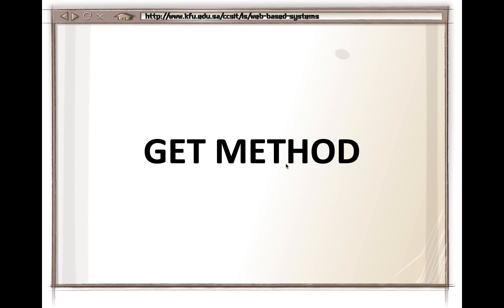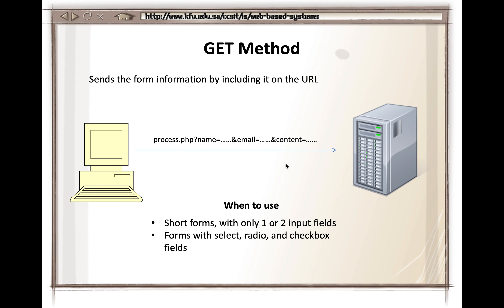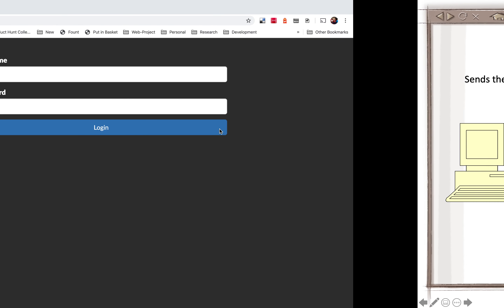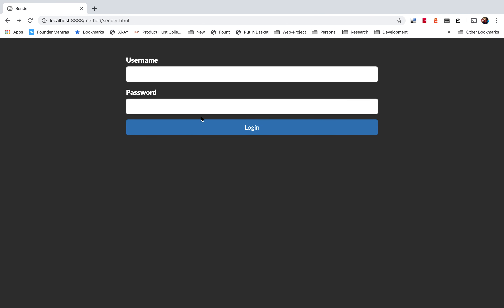There are two methods: GET and POST. With the GET method, the browser takes your data and appends it to the end of the URL, sending it back to the server through the URL. Let's see that in action. I have a form with two fields — username and password — and a submit button. When the button is pressed, it should carry this data to another page.